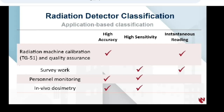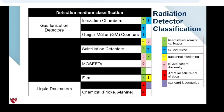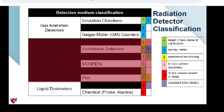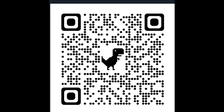The first table classifies different types of detectors in terms of their application. This table separates many different detector types into three different materials: gas ionization, solid state, and liquid detectors. Each of our detectors will fall into one of these.